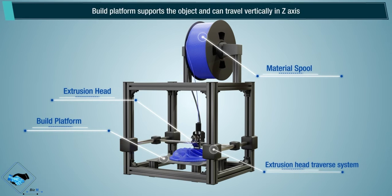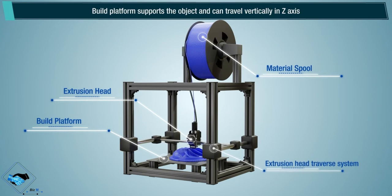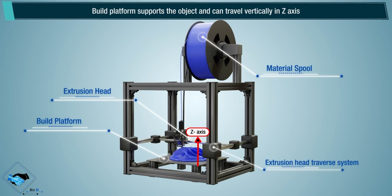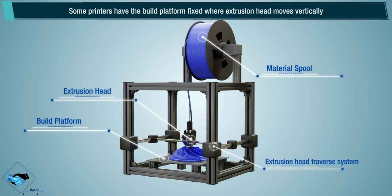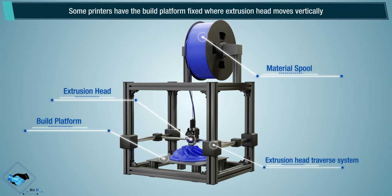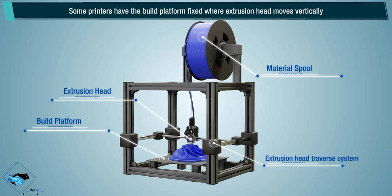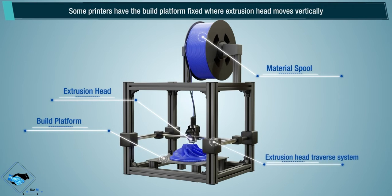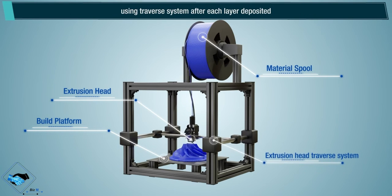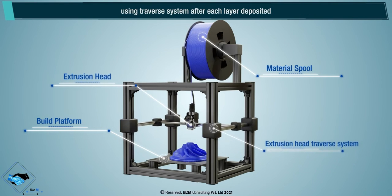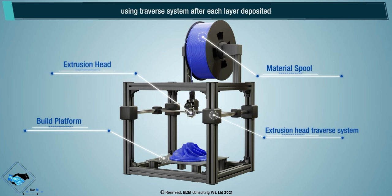The build platform supports the object and can travel vertically along the Z axis. Some printers have the build platform fixed, where the extrusion head moves vertically using the traverse system after each layer is deposited.